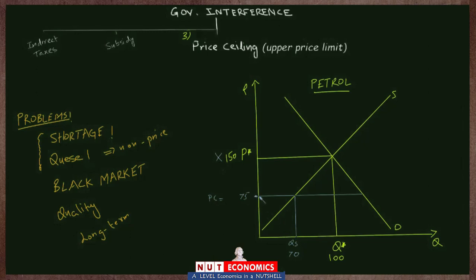As the price falls, some producers will leave the market and quantity supplied will fall. On the other hand, as the product becomes cheaper, more consumers will be interested in buying it, so quantity demanded will increase. The new quantity demanded at this new price of 75 is the horizontal distance from this price up to the demand curve — let's call that QD. This QD is clearly more than the equilibrium quantity, so let's say it is 120 units. The difference between 120 units demanded and 70 units supplied — a shortage of 50 — is the shortage created by placing a price ceiling.